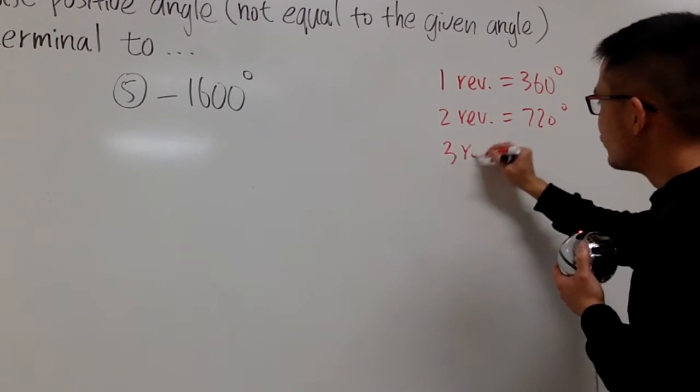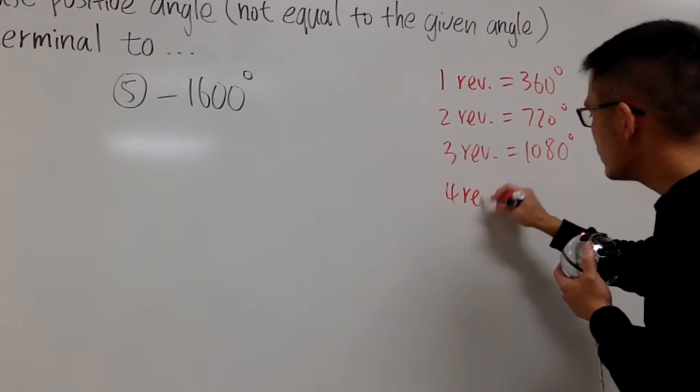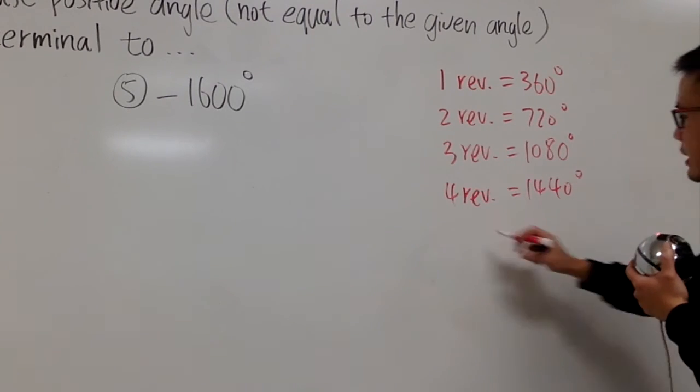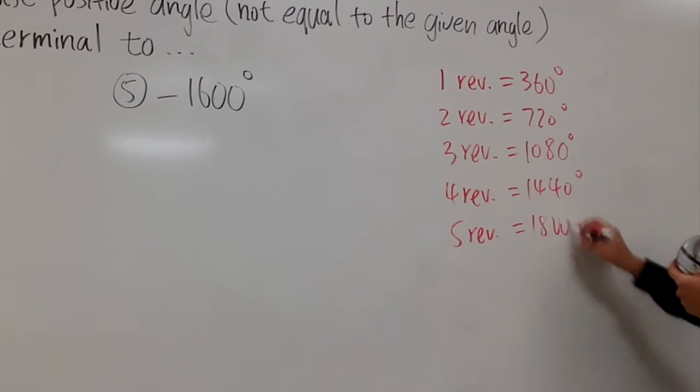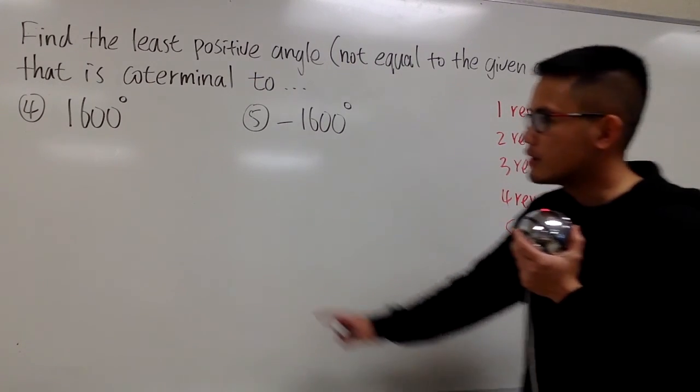Three revolutions is going to be 1080 degrees. Just keep adding 360 degrees. And then the fourth one is going to be 1440 degrees. And then the fifth revolutions is going to be 1800 degrees. And you can put on more, but I'll just put on these five.